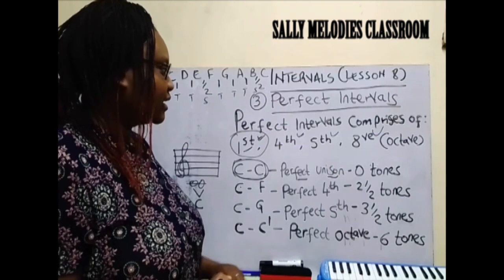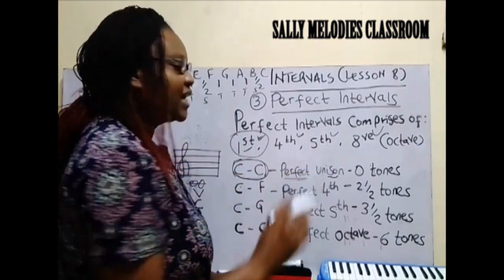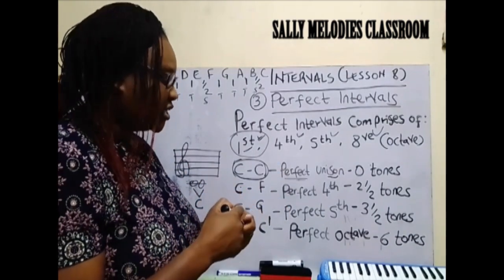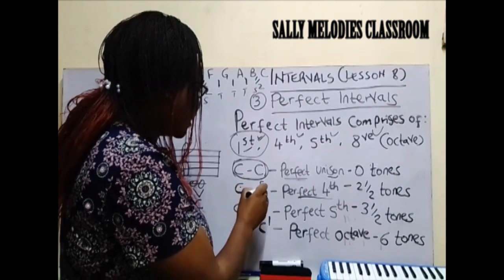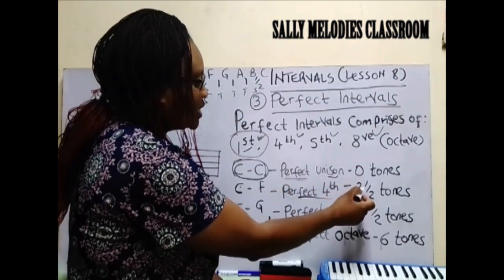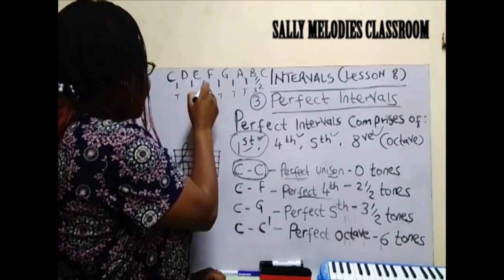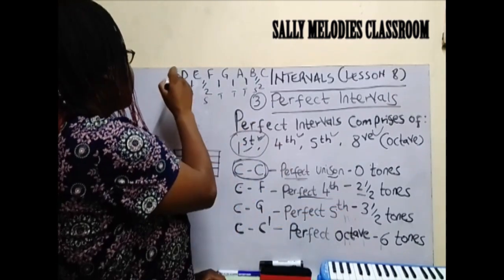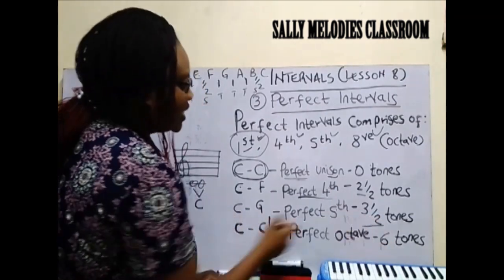Those are the categories of a perfect interval. A perfect unison doesn't have any tones or semitones because you are not moving anywhere. From C to F it is a perfect fourth because if you count from C to F you get four notes. It is a perfect fourth because it has two and a half tones. From C to G is a perfect fifth — one, two, three, four, five — and it has three and a half tones.